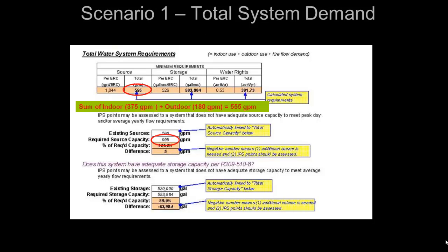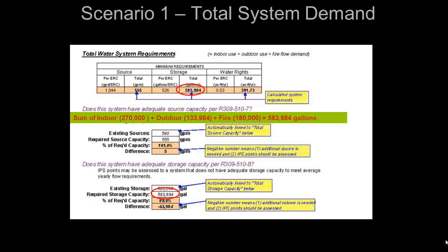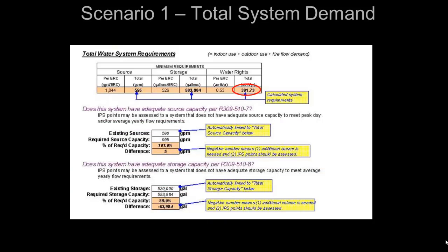Source capacity is calculated by adding the indoor and outdoor demands for a total of 555 gallons per minute. Storage capacity is calculated by adding the indoor, outdoor, and fire demand requirements for a total of 583,984 gallons. Water right requirements are also totaled to verify that the system has sufficient water rights. The spreadsheet will then help us determine if the system has adequate source and storage capacity. In this example, this system has just enough source capacity but is lacking or deficient in the needed storage volume — short by about 64,000 gallons. This deficiency for lacking proper storage capacity will need to be documented in the Electronic Sanitary Survey Program.